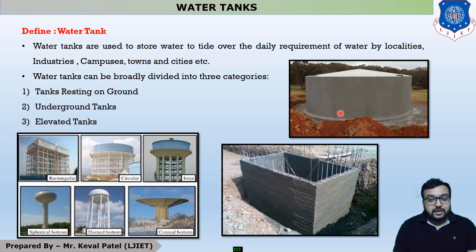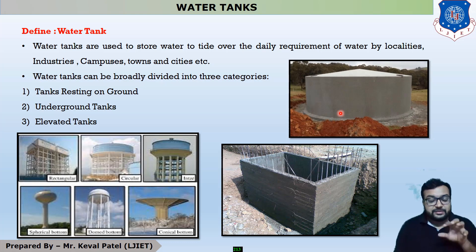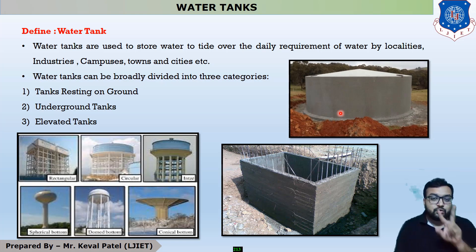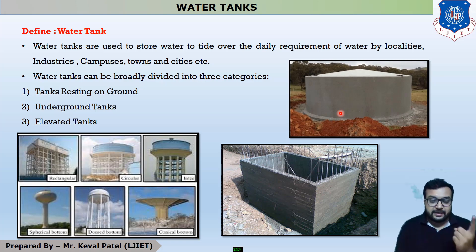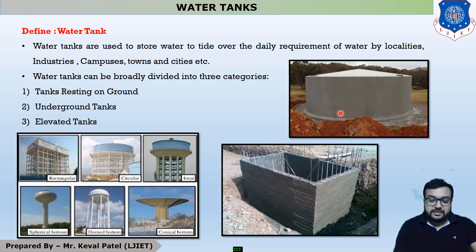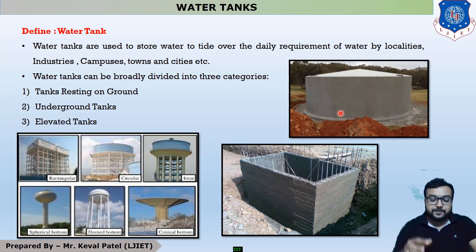For underground water tanks and rest-on-ground water tanks, there are mainly two types of shapes: rectangular and circular. This is the main introduction of the last chapter, which is the design of water tanks.